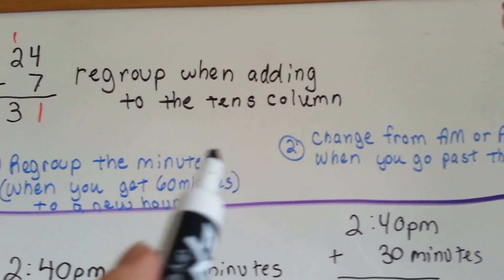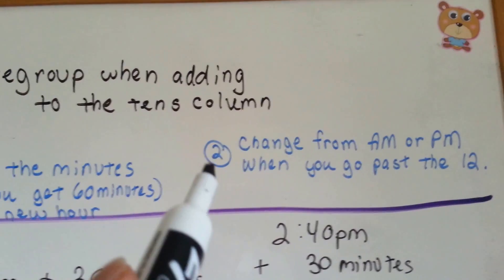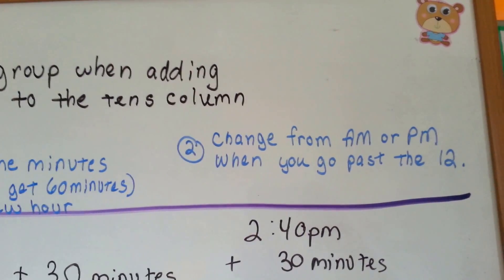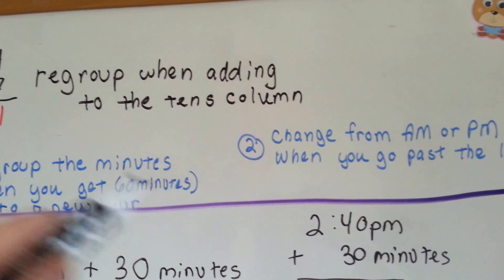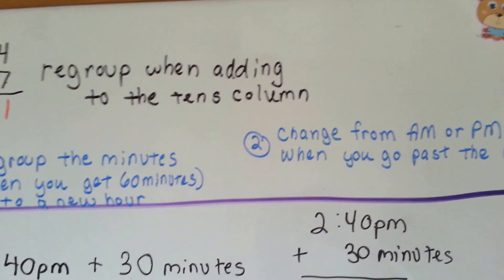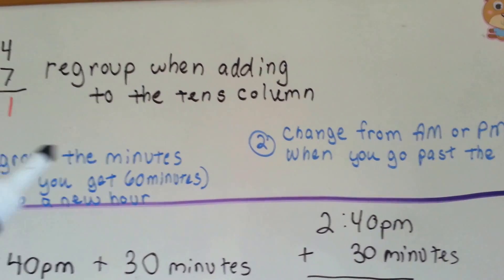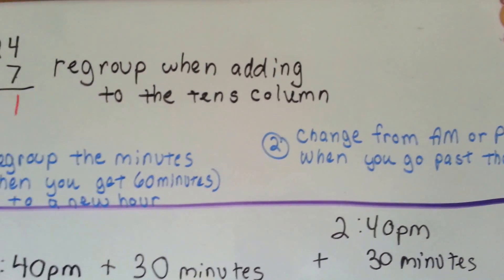The other important thing you have to remember is you have to change from AM to PM when you go past the 12. Remember, the clock goes around two times in one day. The hour hand goes around two times in one day. It goes from 12 noon to 12 midnight.